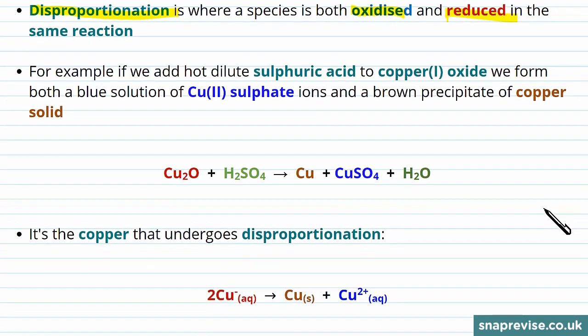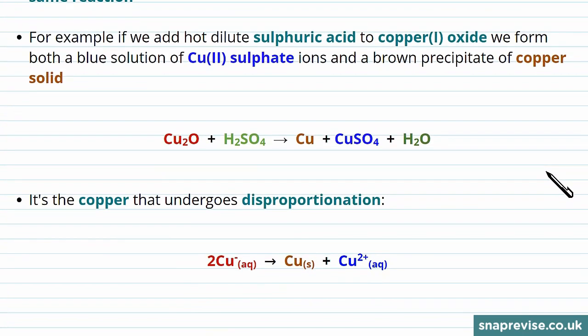So it's easiest to see this in an example. If we were to add hot dilute sulfuric acid to copper(I) oxide, then we form a blue solution of copper(II) sulfate ions and a brown precipitate of solid copper. The full reaction is shown here, where we have our copper(I) oxide, because oxygen has a 2- oxidation number. So because this species is not charged, each of the coppers must provide a 1+ oxidation number.